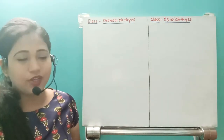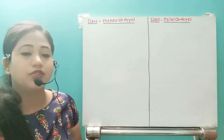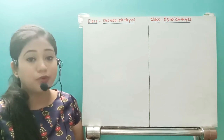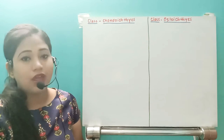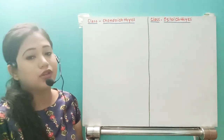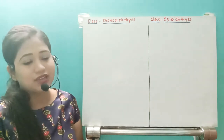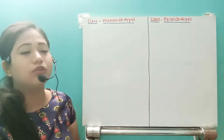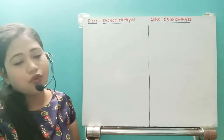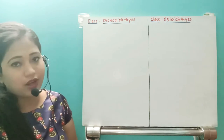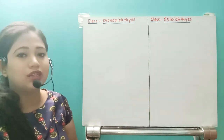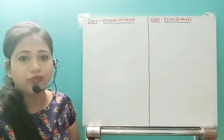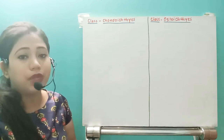Hello students. In the last video we saw the general characteristics of division Gnathostomata, and the superclass Pisces. Under superclass Pisces we are going to see two classes: the first class is Chondrichthyes and the other class is Osteichthyes. To understand these two classes we will see the differences, and once we complete the differences you will understand what characteristics are present in Chondrichthyes and Osteichthyes separately.